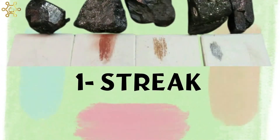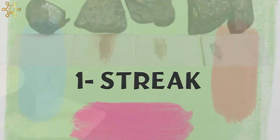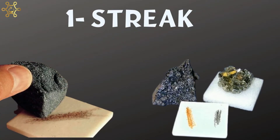Number 1: Streak. The streak of a mineral is the color of its powder. Although the color of a mineral can vary, its streak does not.